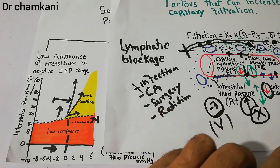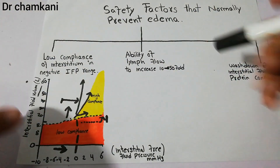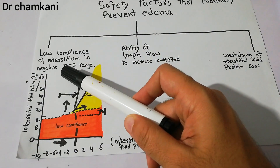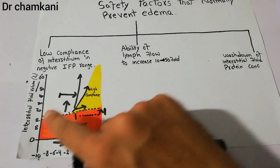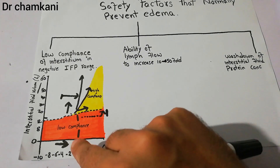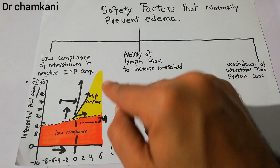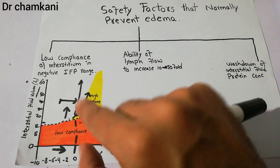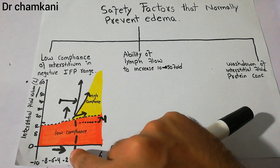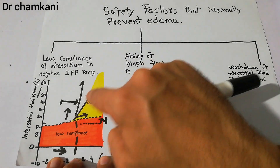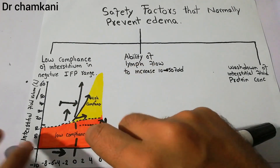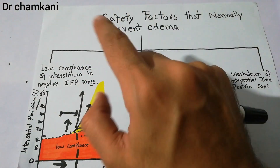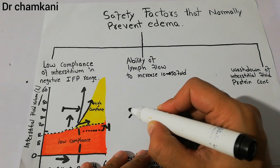To summarize, the first safety factor that normally prevents edema is the low compliance of the interstitium in the negative interstitial fluid pressure range. When this pressure is in the negative range, a small increase in volume brings a big change in interstitial fluid pressure, preventing further movement of fluid from capillary into the interstitium. Once it reaches zero, further volume increase no longer raises pressure, and fluid keeps collecting — edema occurs. The value of this safety factor is approximately minus 3 mmHg.